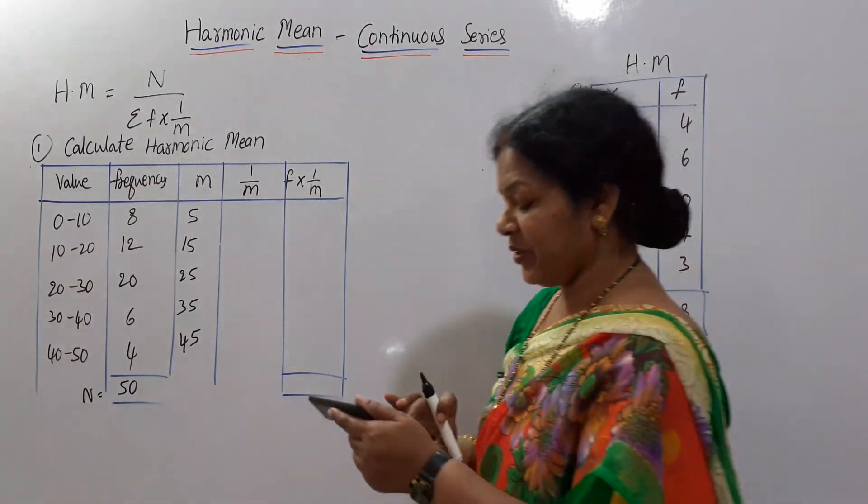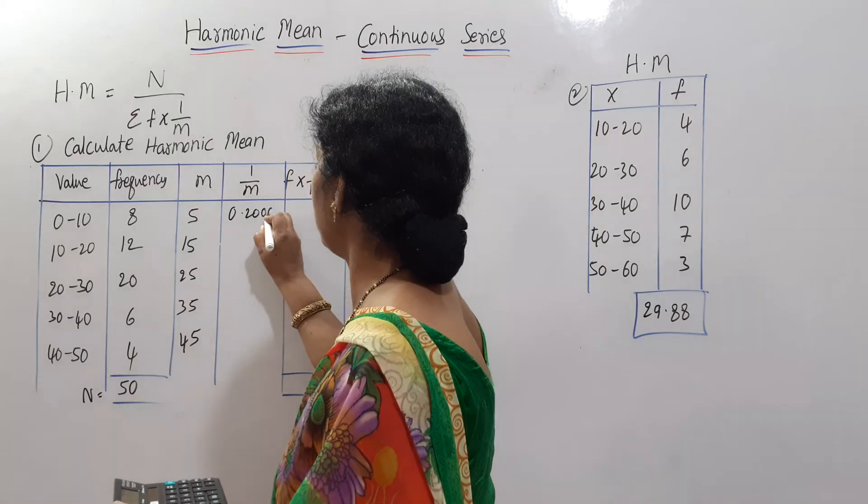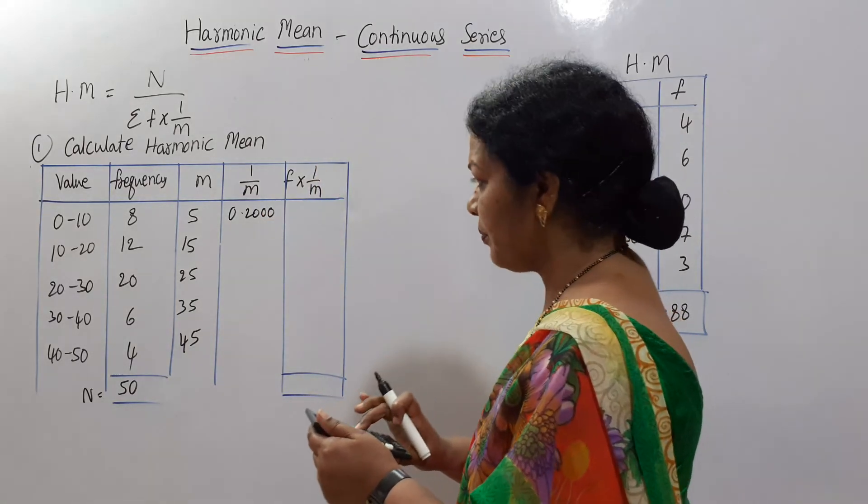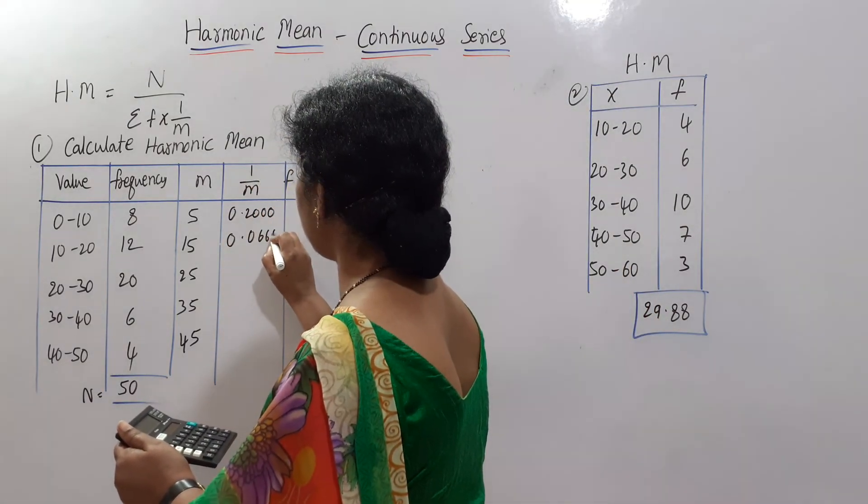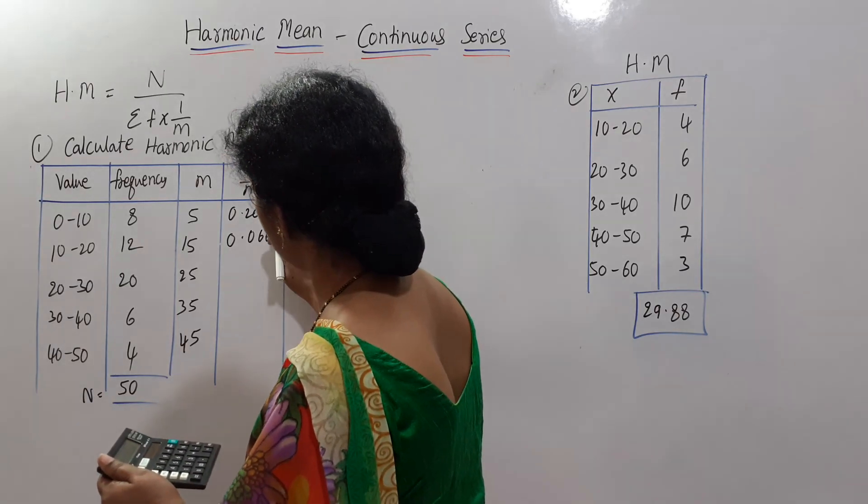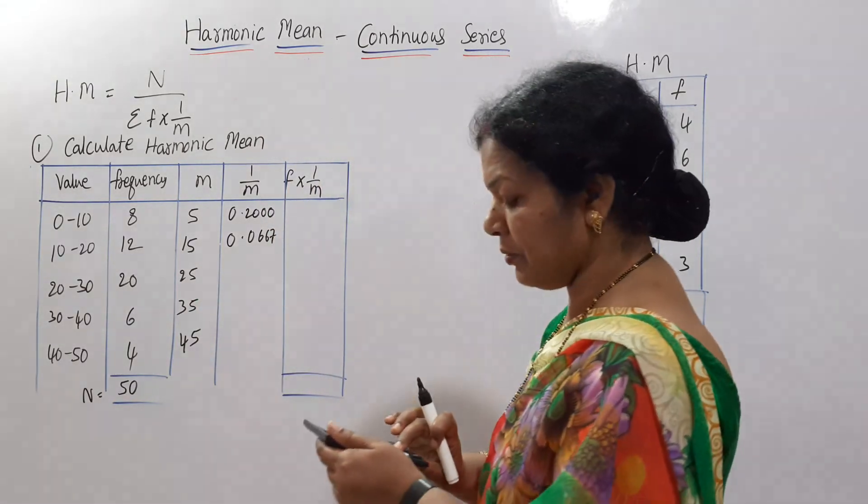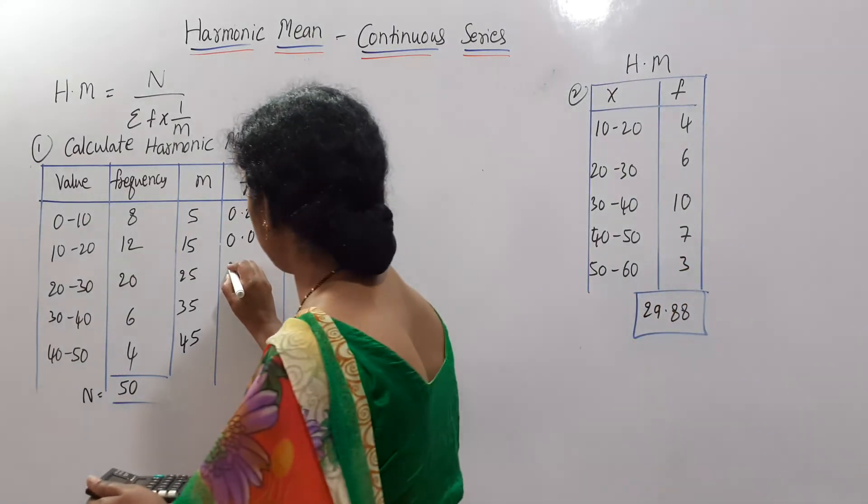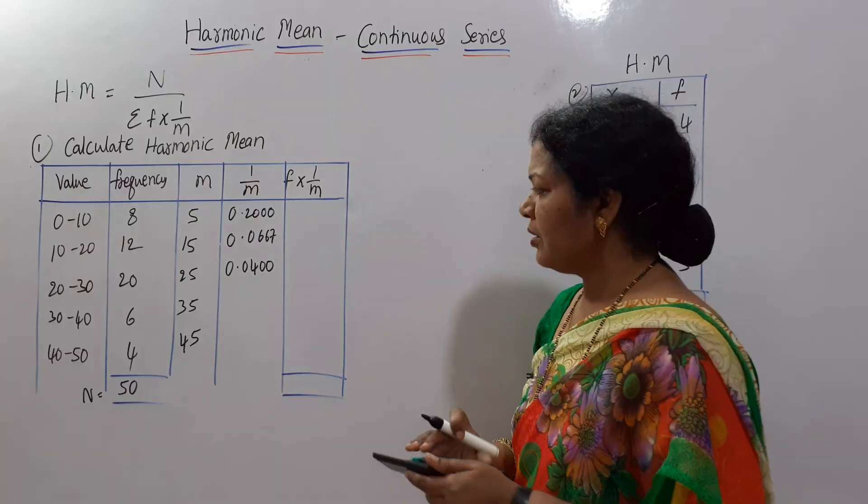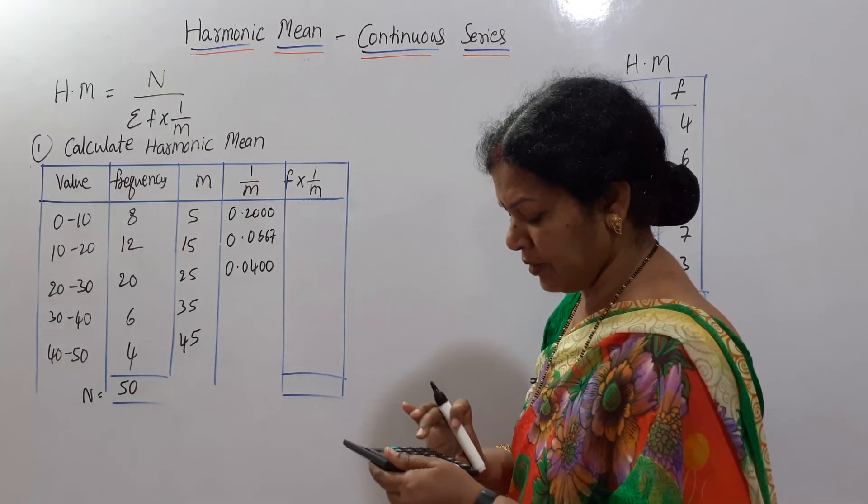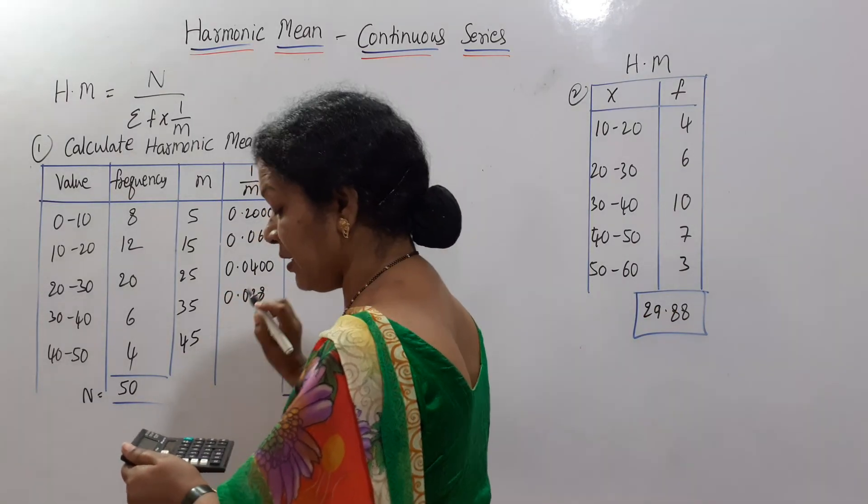What we need next? 1 by M. Earlier 1 by X, now 1 by M. Let's see: 1 divided by 5 is 0.2. Next, 1 divided by 15 is 0.0666, it's going on like this, so we can take 0.0667. Next, 1 divided by 25 comes to 0.04. Next, 1 divided by 35 is 0.0286.